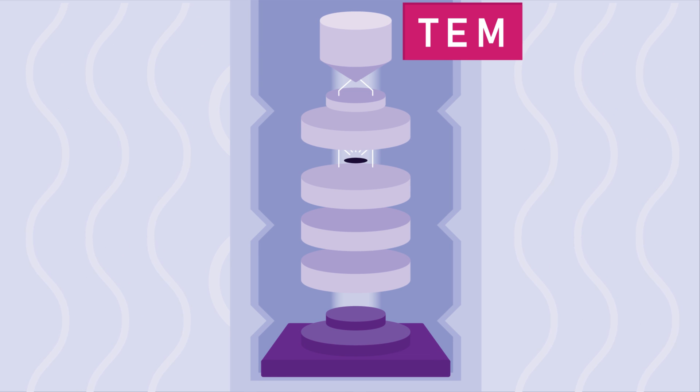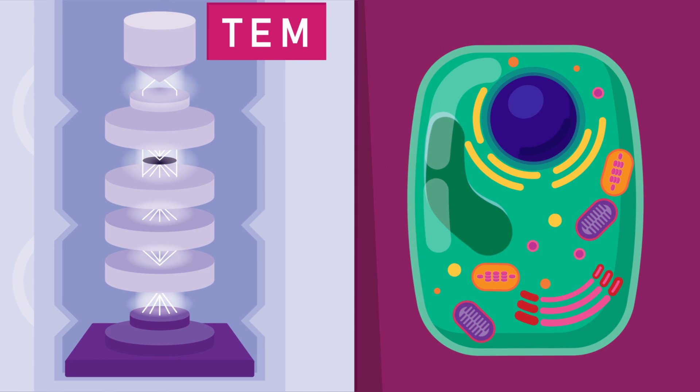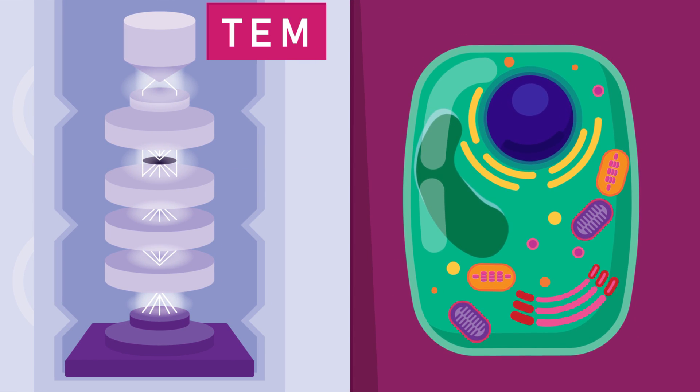In the transmission electron microscope, the beam of electrons is passed through the specimen before being viewed. Only those electrons that are transmitted are seen. This enables us to see different components inside the cells.